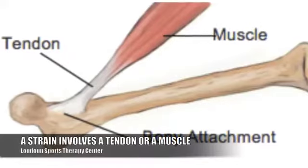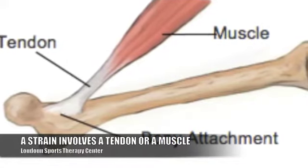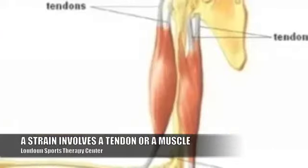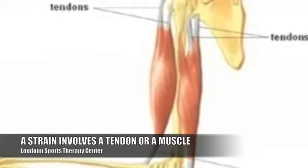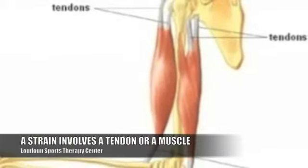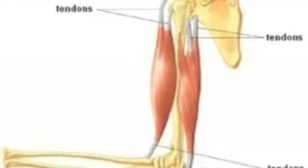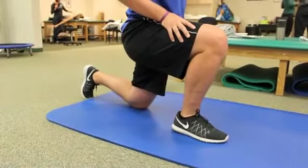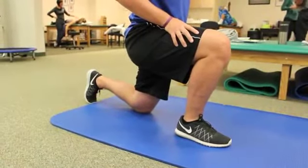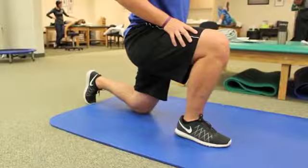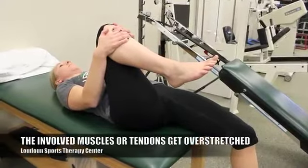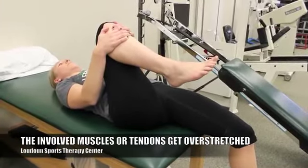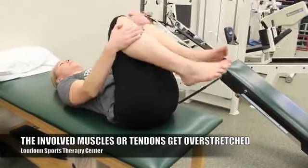A strain actually involves a tendon. A tendon is a piece of soft tissue that attaches a muscle to the bone. When you strain something, you're either straining that tendon or you may also be straining the muscle involved. Same concept — it's overstretching either of those two things, which may cause some micro tears in the soft tissue.